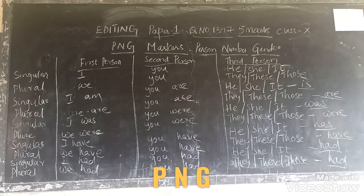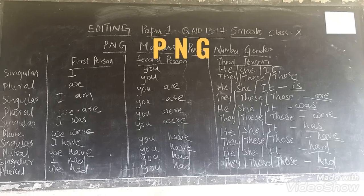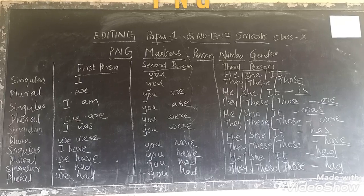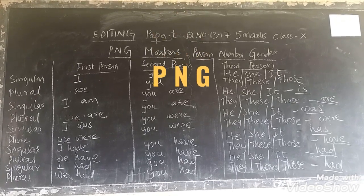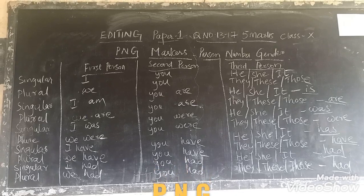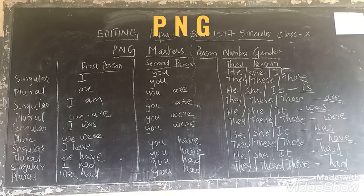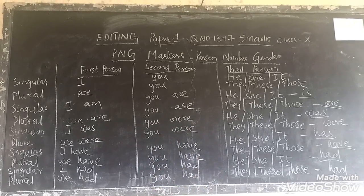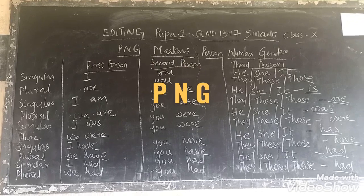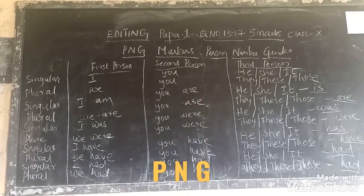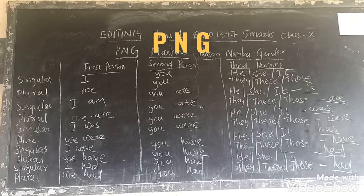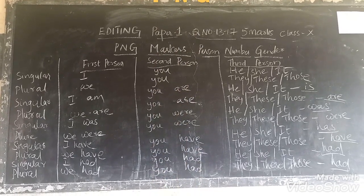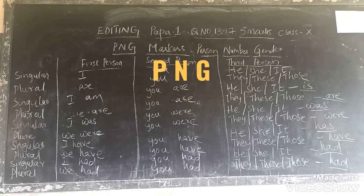For third person in past tense: if it is he, she or it, we should use 'was' — he was, she was, it was. And in plural form, we use 'were' — they were, these were, those were. For the present perfect form: I have, we have, you have. But for third person singular it is he has, she has, it has. And in plural form: they have, these have, those have.